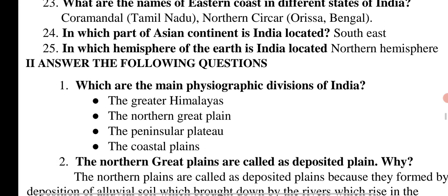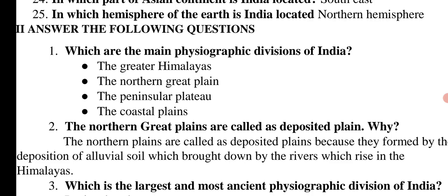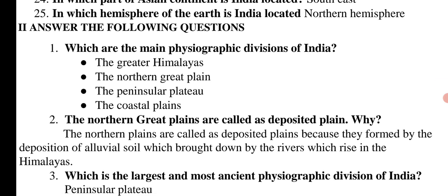Answer the following questions. First question: Which are the main physiographic divisions of India? Right answer: The Greater Himalayas, the Northern Great Plains, the Peninsular Plateau, and the Coastal Plains. Next question: Why are the Northern Great Plains called Deposited Plains? They are called Deposited Plains because they are formed by deposition of alluvial soils brought down by rivers rising in the Himalayas.